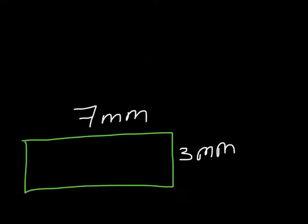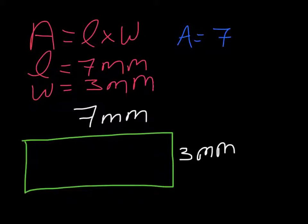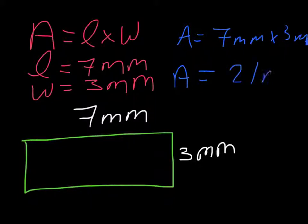Let's try again, we can look at it, 7 times 3. And let's write the formula one more time. Area equals length times width. Length equals 7 millimeters. Width equals 3 millimeters. Area equals 7 millimeters times 3 millimeters, which is 21 millimeters squared.